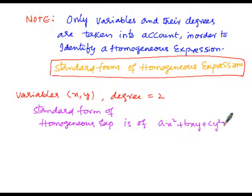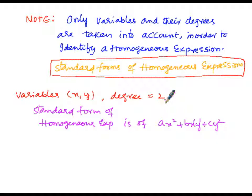The first term is x², whose degree is 2. The second term is bxy, where x has degree 1 and y has degree 1, so together the degree of the second term is 1+1 = 2. The third term is cy², whose degree is also 2. This is the second degree homogeneous expression in variables x and y.